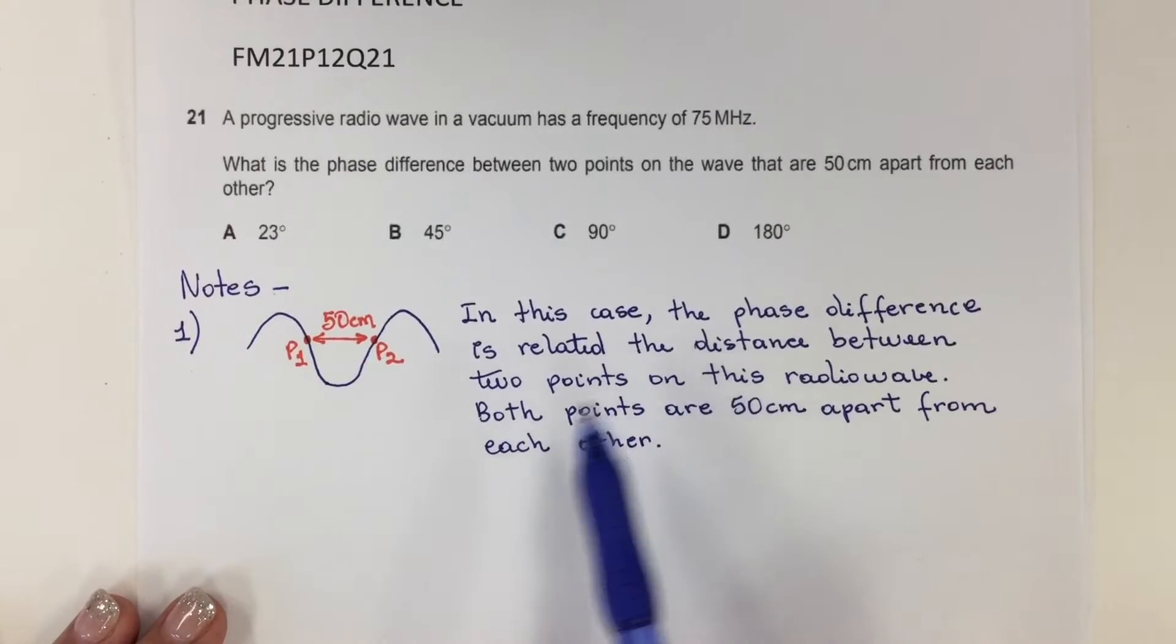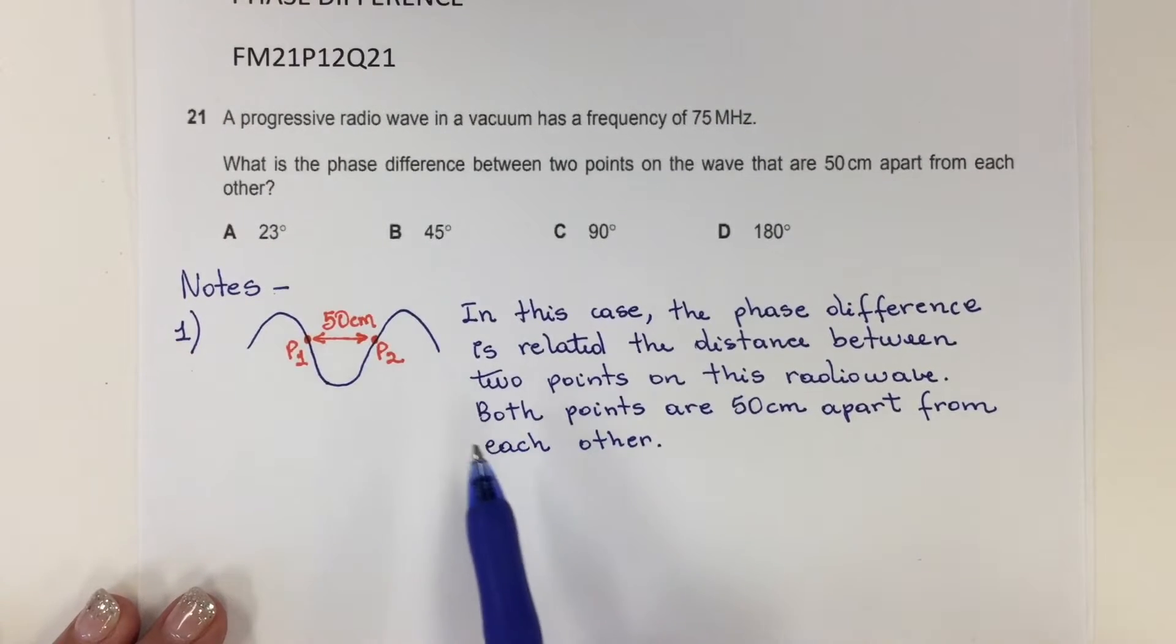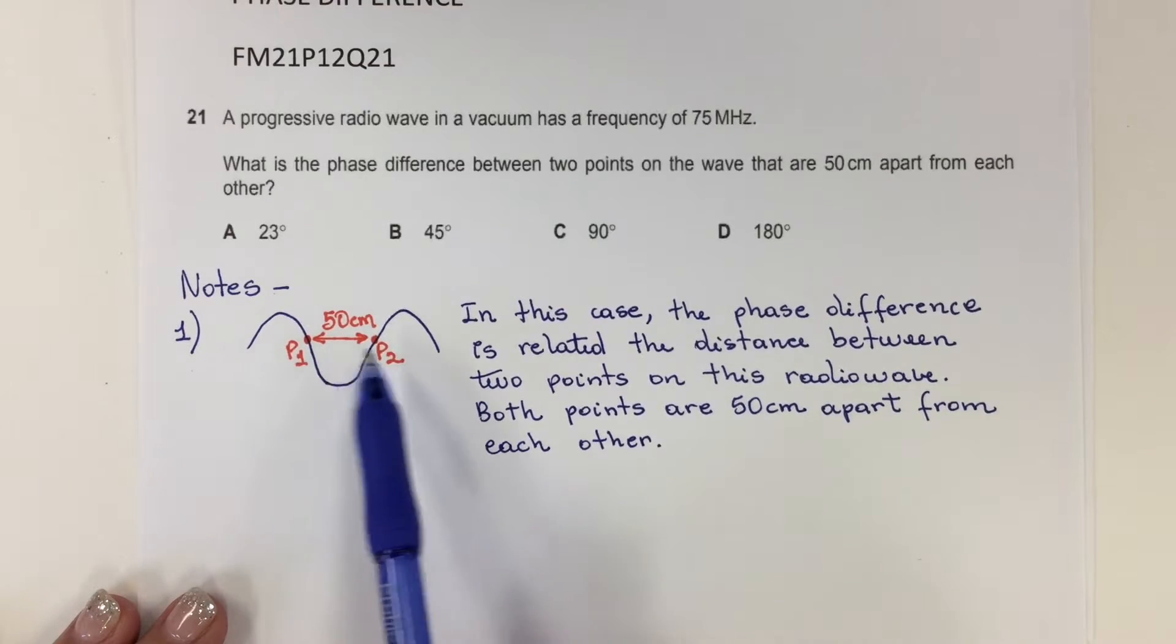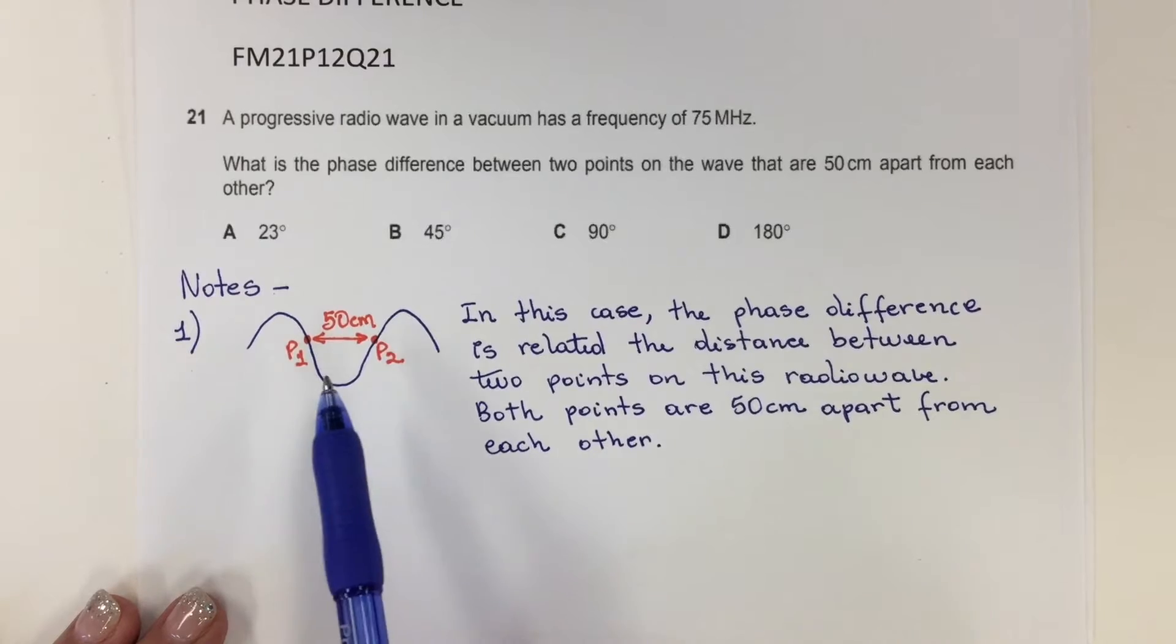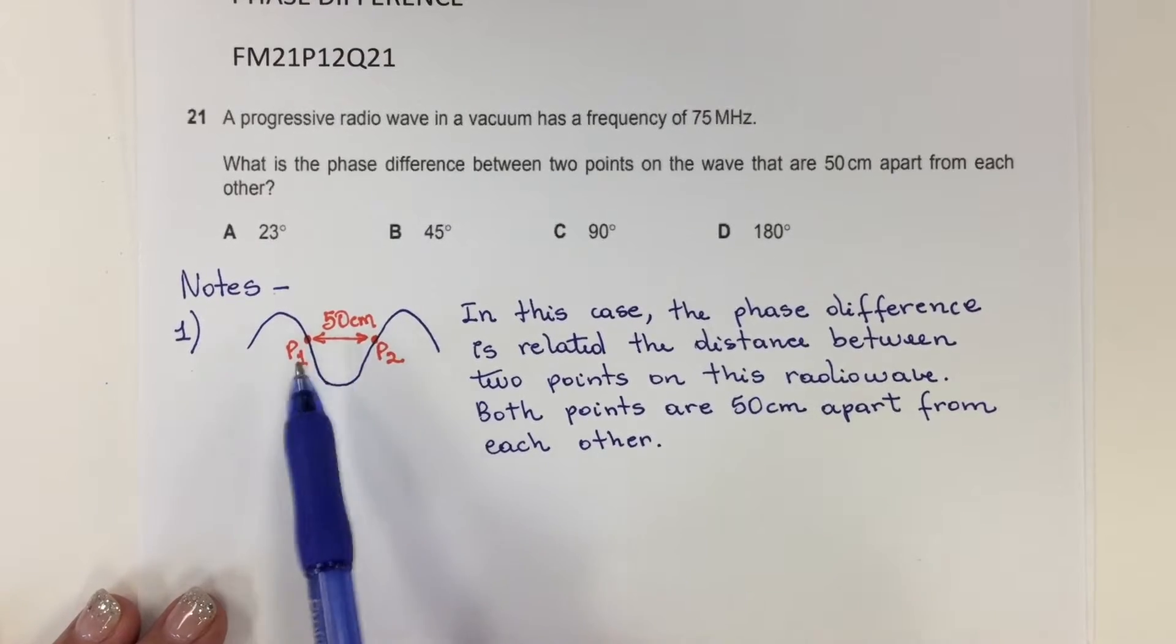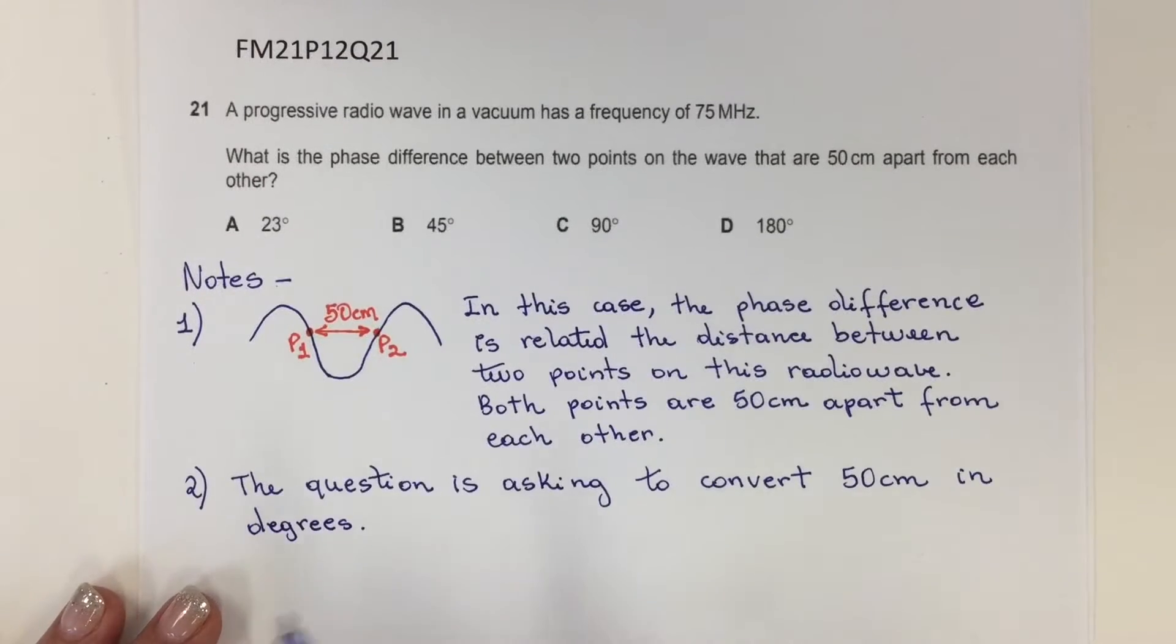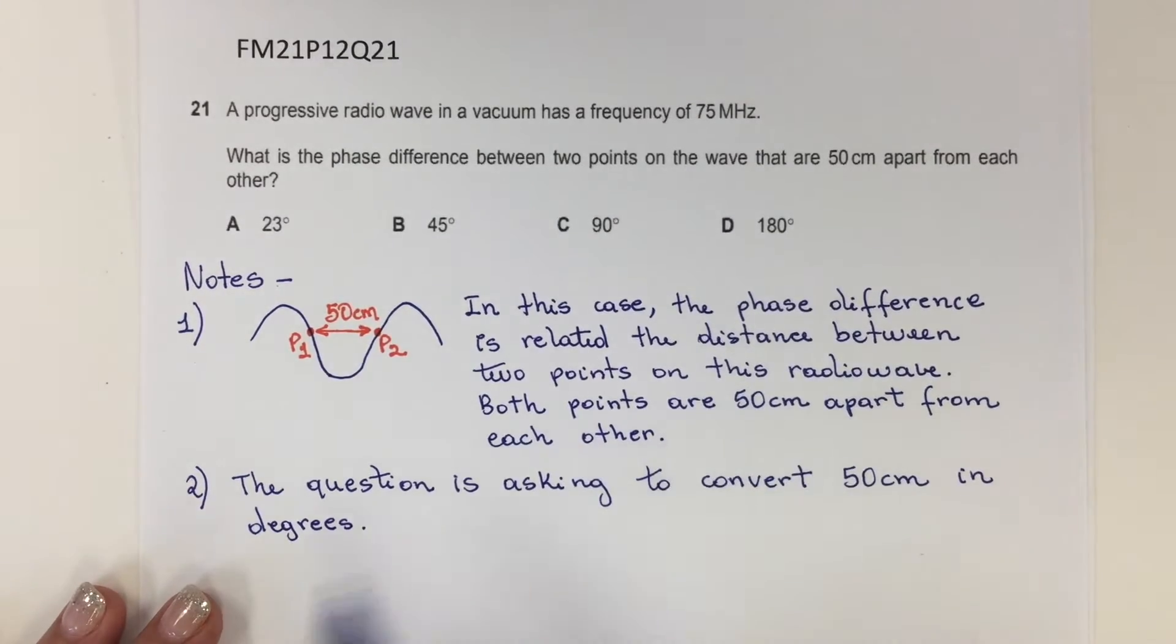In this case, the phase difference is related to the distance between two points on this radio wave, and both points are 50 centimeters apart from each other. Basically, the question is asking to convert the 50 centimeters into degrees.